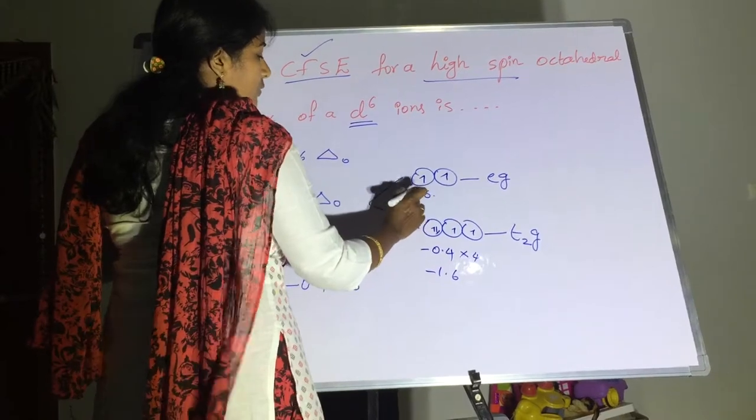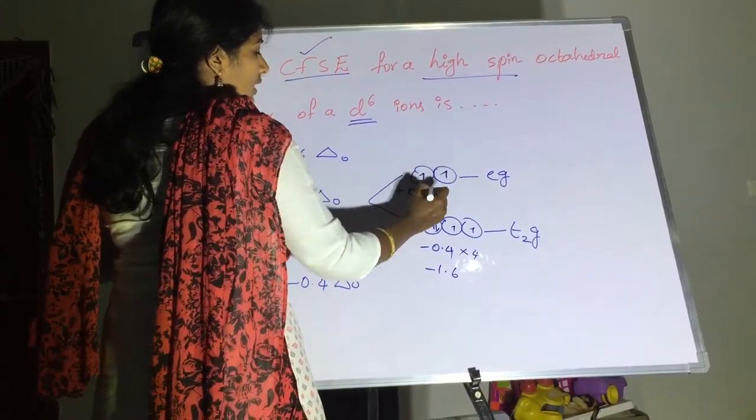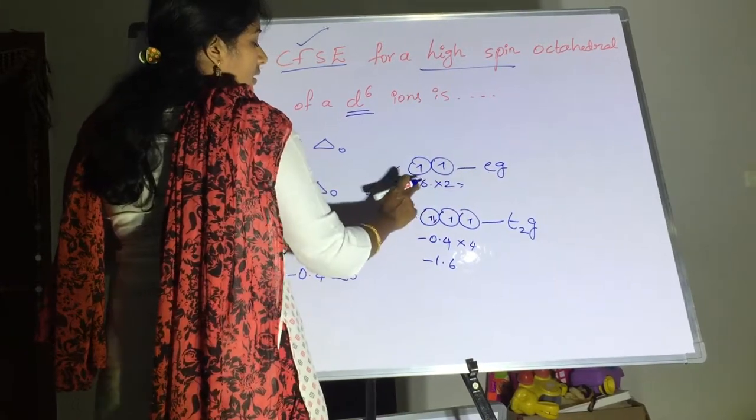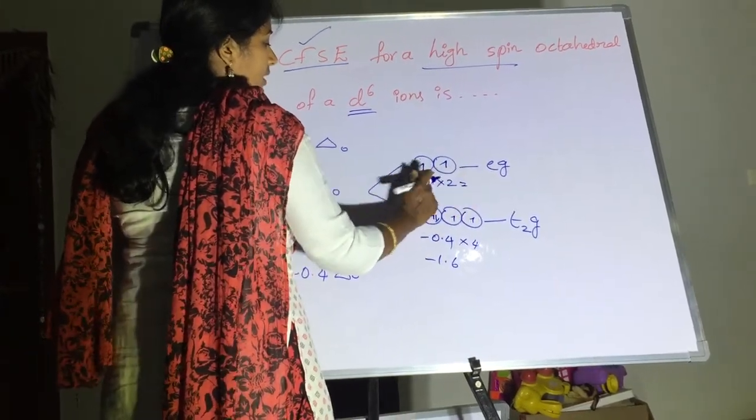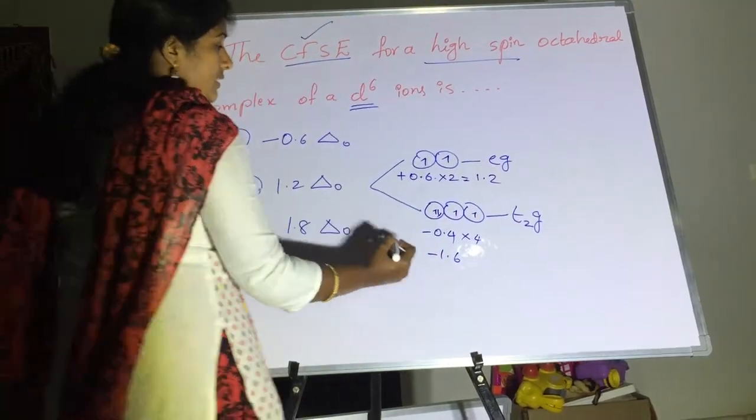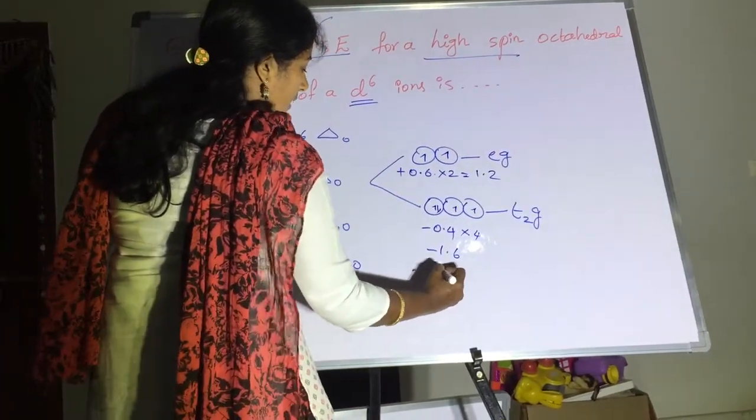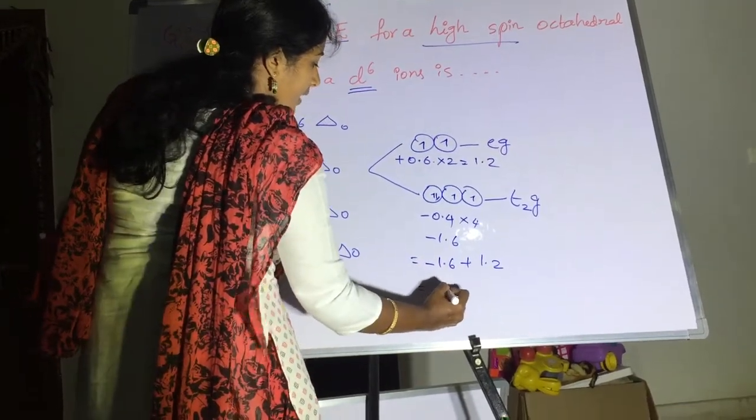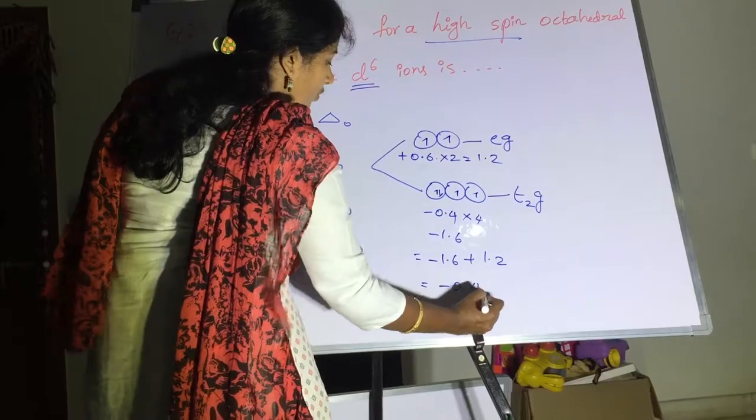Then in case of this eg, here 2 electrons are there, plus 0.6 into 2. The answer is 0.6 into 2, 1.2. Then let us take the total of this. Minus 1.6 plus 1.2. Here it may be minus 0.4.